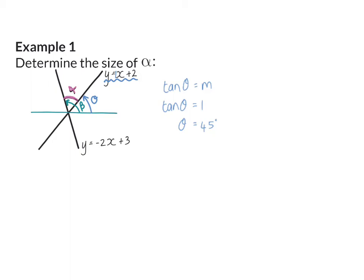Next I'm going to calculate the size of angle beta. So tan of beta, the inclination angle, will be equal to that line's gradient. Here the gradient was given as minus 2, so tan beta equals minus 2. Because we have a negative gradient here, you need to remember that the angle beta will be 180 degrees minus the reference angle. So in this case, beta is 116.57 degrees.